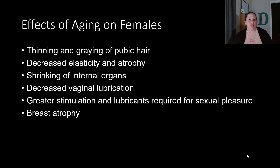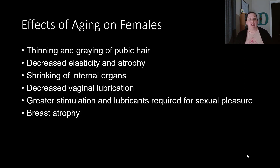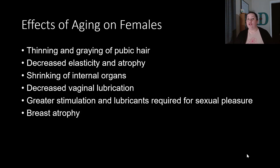Effects of aging on the female reproductive system include thinning and graying of pubic hair, decreased vaginal elasticity and atrophy, shrinking of internal organs especially the ovaries as they stop producing hormones and eggs during menopause, decreased vaginal lubrication making intercourse more painful, greater stimulation and lubricants required for sexual pleasure, and breast atrophy.